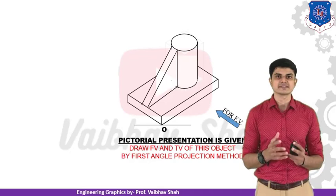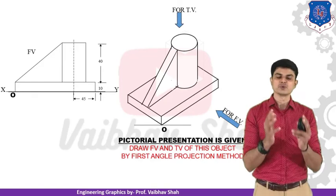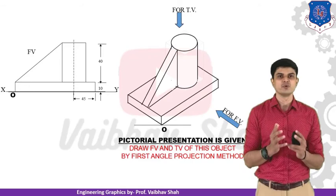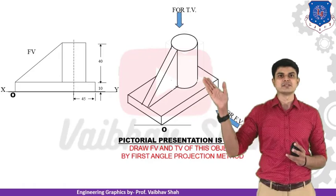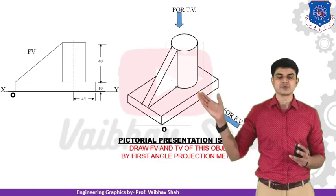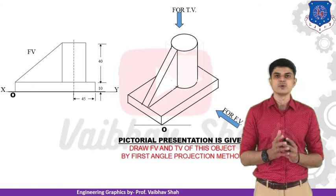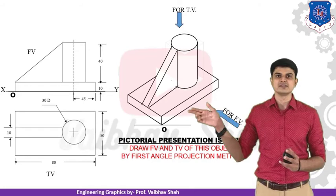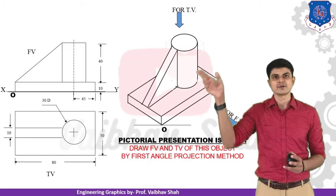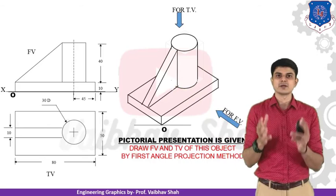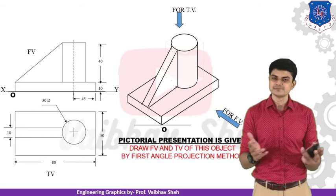Here is another figure. We take the front view and top view using the first angle system. We always start with the front view because it is the most important. Observing from the front: there is a rectangular plate, on it a cylindrical portion seen as a rectangle, and a triangular plate. Now the top view: you can see the rectangular plate completely, the circle of the cylinder, and the rectangular slot of the triangular portion. Specify the dimensions to the top view and you are done.